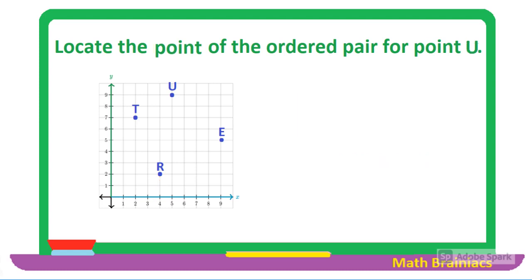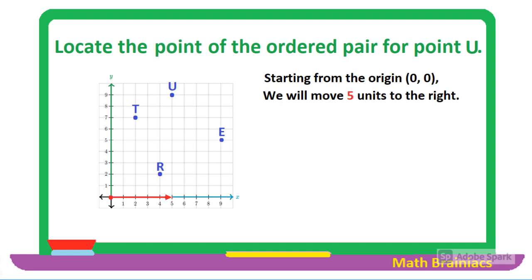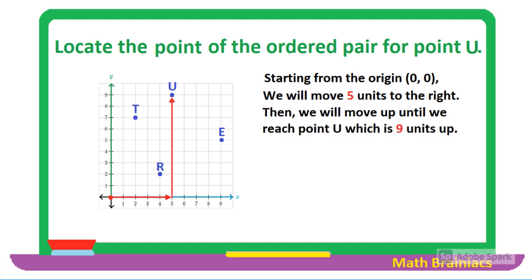Let us work on another example. Locate the point of the ordered pair for point U. Starting from the origin, which I marked with the red dot, we are going to move five units to the right, then move up nine units until we reach point U. Point U is located at the ordered pair (5, 9). It is easy, right?